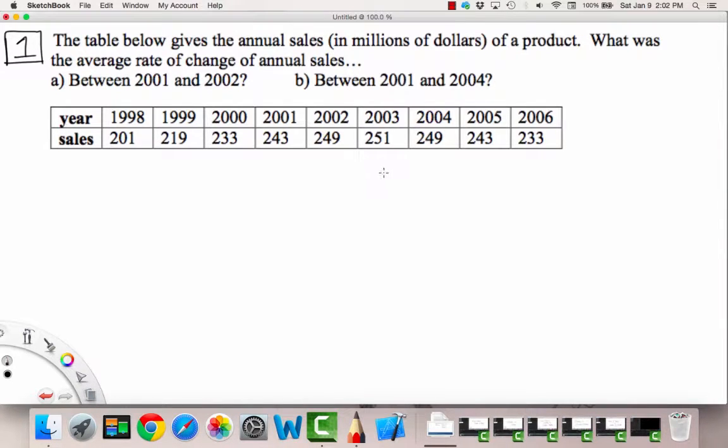We have the table below gives the annual sales in millions of dollars of a product. What was the average rate of change of annual sales? Part A: Between 2001 and 2002. And Part B: Between 2001 and 2004. So we have two mini problems in here.